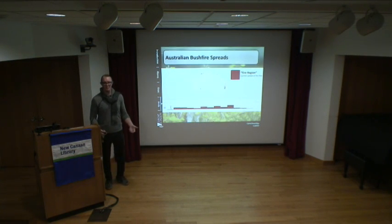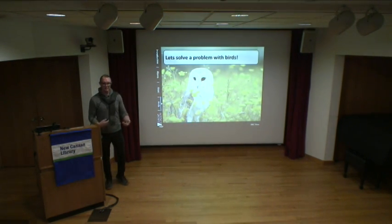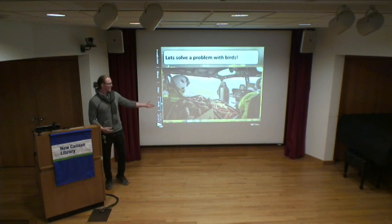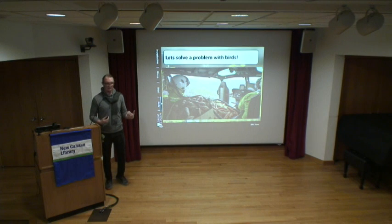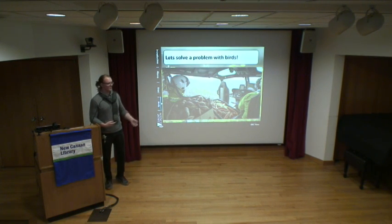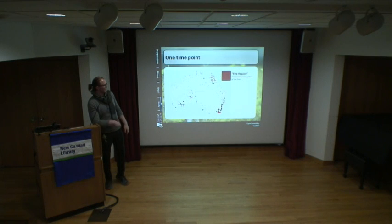We can look at how the fire spread starting in November through late January. With such a disaster, it makes sense to want to intervene. Traditionally, helicopter pilots are commissioned to fly to the fire boundary and drop food — because whatever animals survive the blaze won't have anything to eat and will starve. But how do you know where to drop the food? We're going to try to solve that problem with birds.